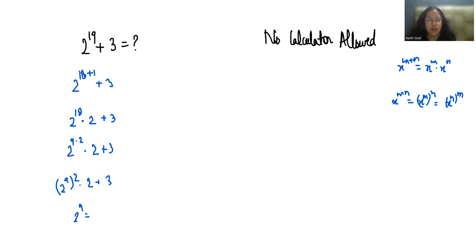So it becomes 512 square times 2 plus 3. 512 I can write as 500 plus 12 whole square times 2 plus 3. So a plus b whole square is a square plus b square plus 2ab. So 500 square plus 12 square plus 2 times 500 times 12.